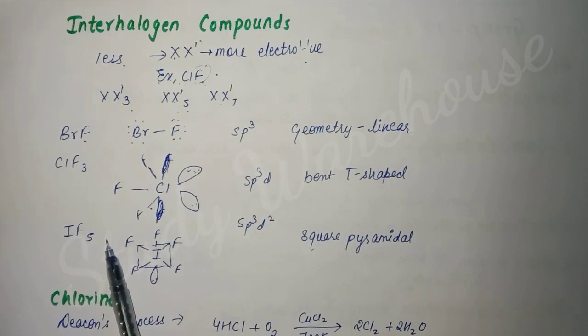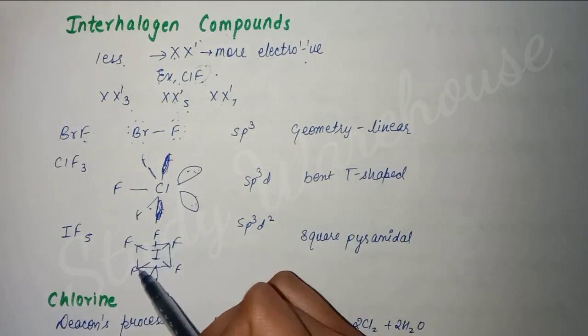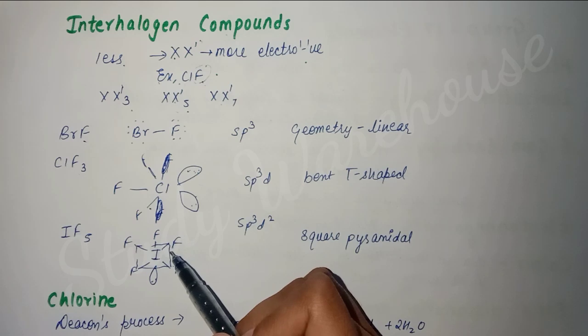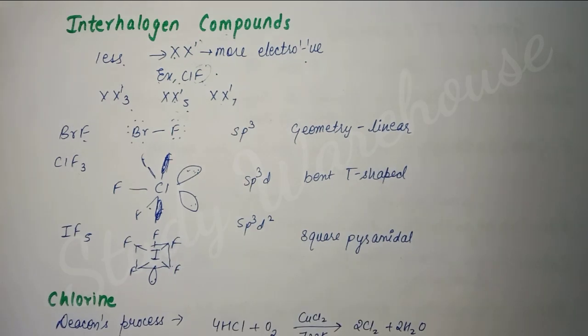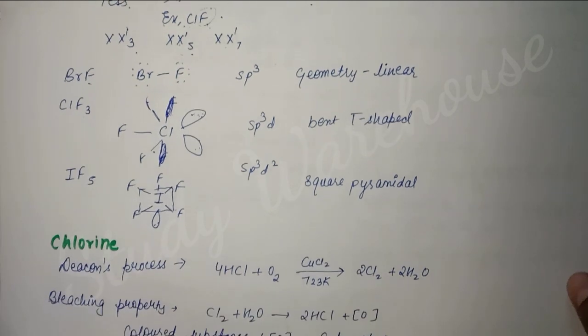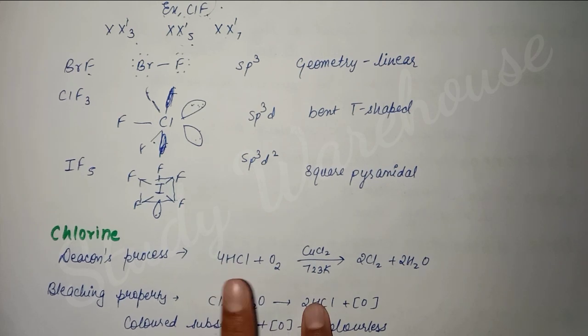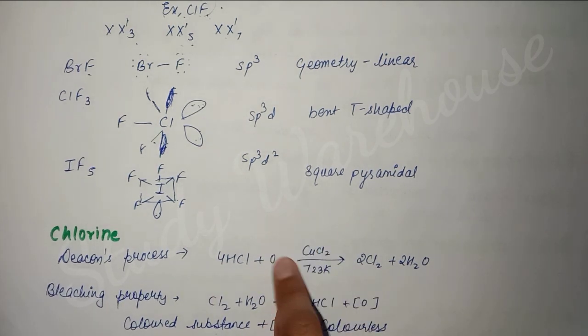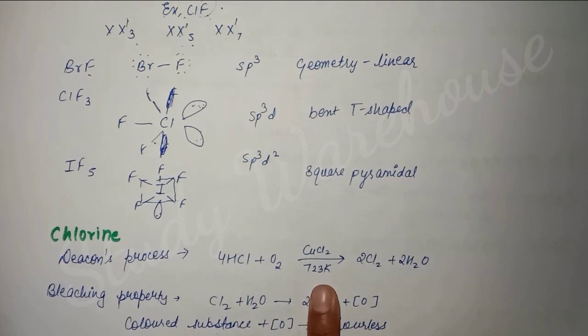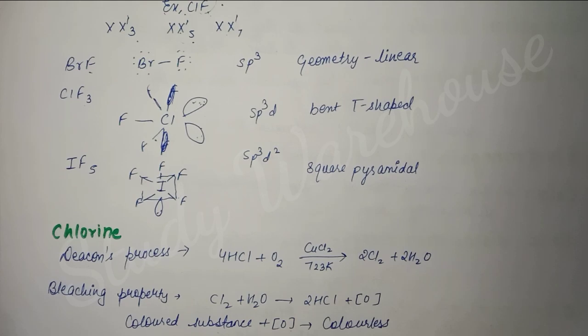For IF5, if we talk about it, iodine is the central atom and 5 fluorines are bonded, which means 2 electrons remain, so 1 pair remains. So its hybridization is sp3d2 and shape is square pyramidal. IF7 is similar, and it's asked more often, so I haven't written it here. Next is chlorine. In chlorine, Deacon's process is most important. The reaction is: HCl reacts with oxygen, catalyst is copper chloride, and temperature should be 723 Kelvin, then chlorine forms. This is Deacon's process - you just need to write it elaborately. This is important.